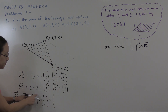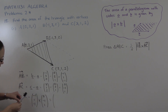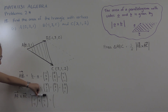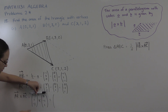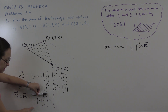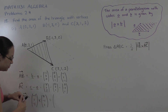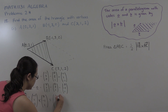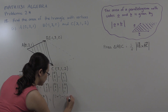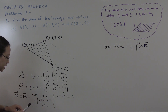For the first component of the cross product, we block out the first row and find the determinant of the remaining 2x2 block. That's one times one, take minus one times minus one. That gives us our first component.